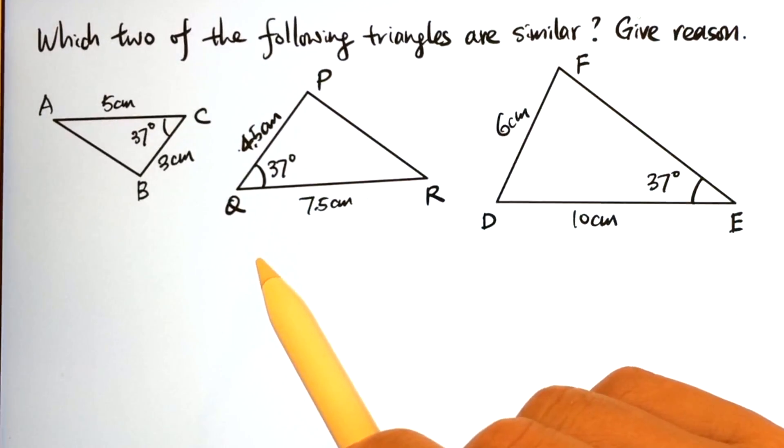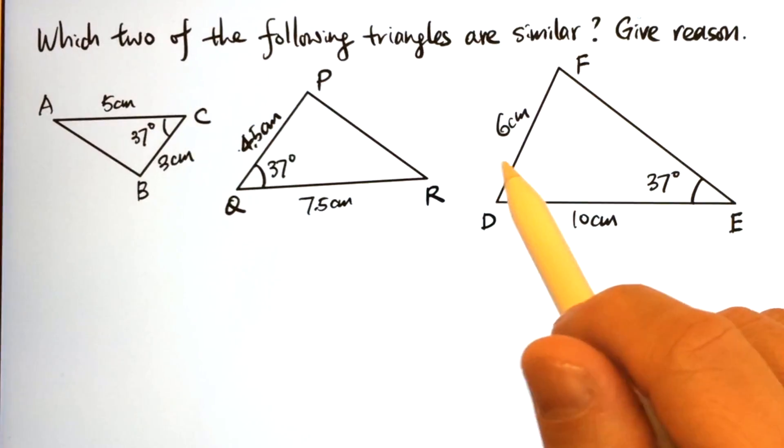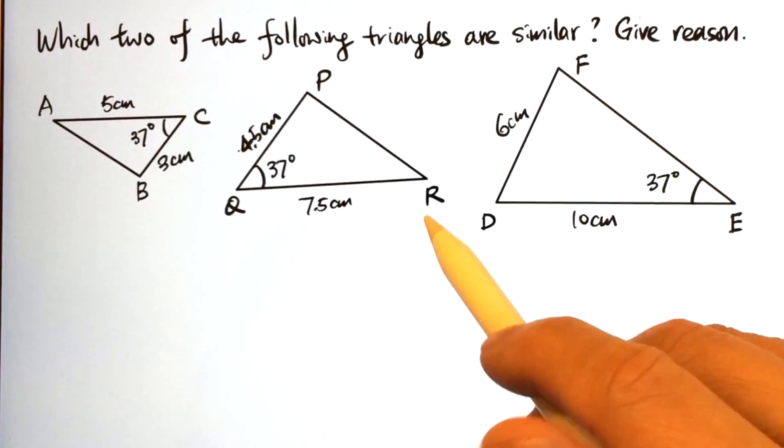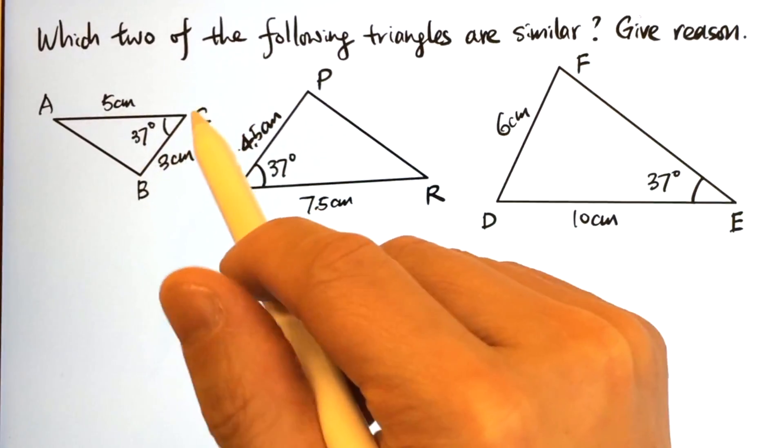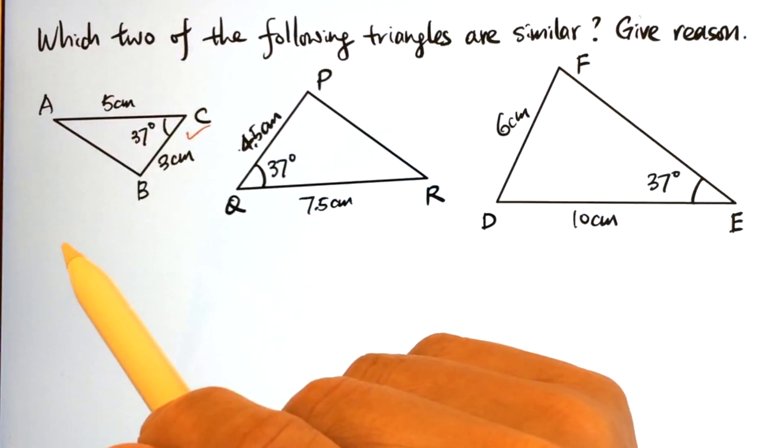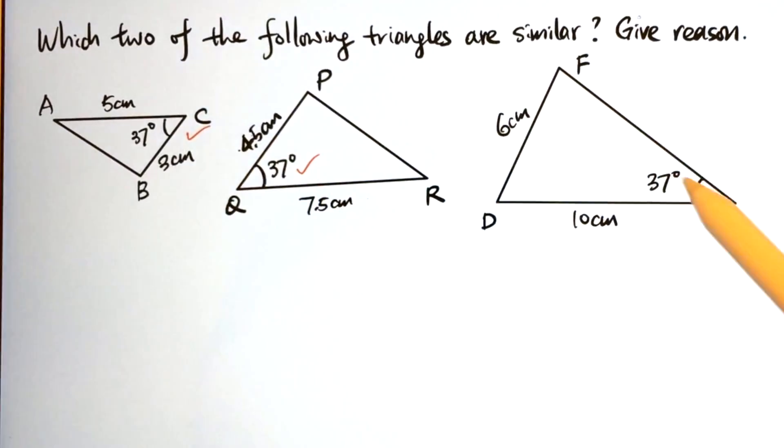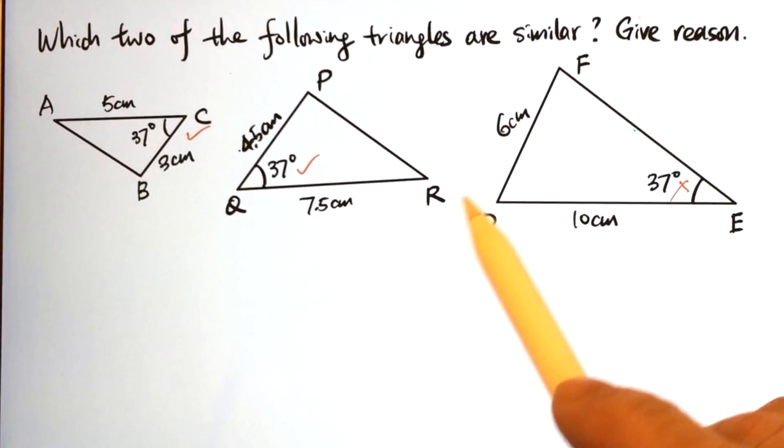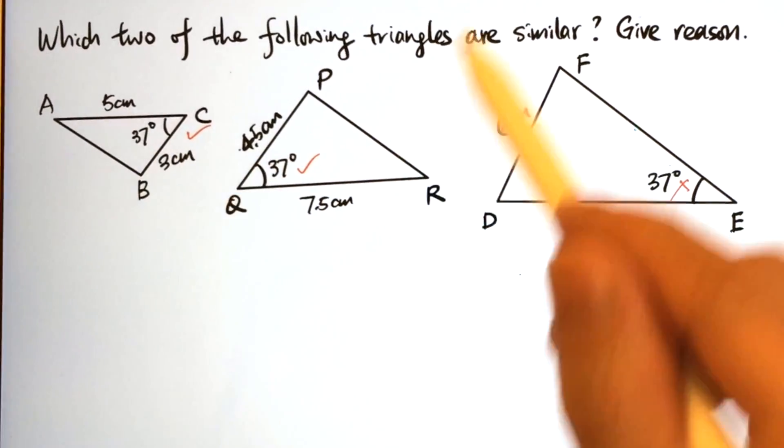The easiest way to find the triangle which is not similar is that the included angle is not given. So we can check: this is an included angle, this is included, but this one is not an included angle. Therefore, probably DEF will not be a similar triangle to the other triangles.